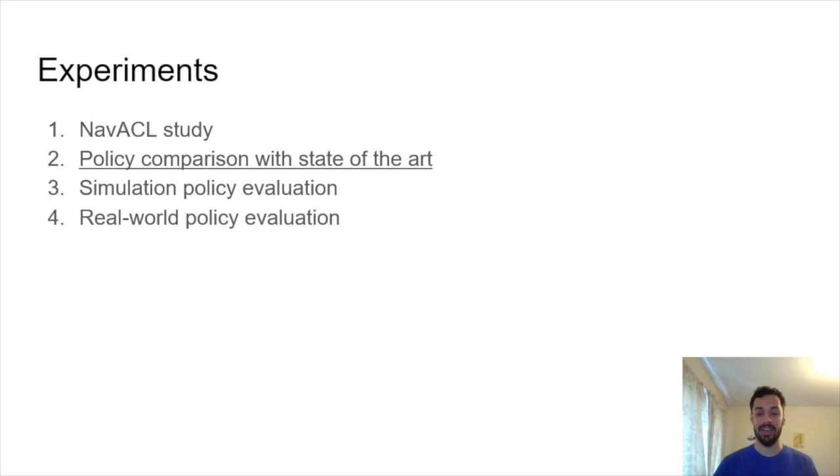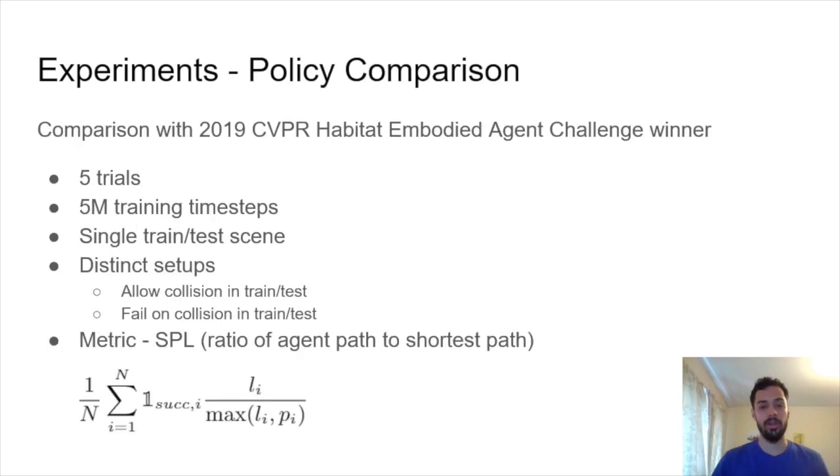Now let's compare our policy trained with NAVACL against state-of-the-art. We compare our NAVACL trained policy with the 2019 CVPR habitat embodied agent challenge winner. Similar to the last experiment, we have five trials, five million training time steps per trial, and we are training and testing on a single scene. We have two distinct setups. In the first setup, we allow collision in the training and testing environment so our agent is allowed to slide along walls. In the second setup, we fail on collision in the training and testing environments as well as provide a negative reward. The metric we use is the shortest path length. This is the standard for embodied navigation and corresponds to zero if our agent never reaches the target and one for the shortest possible path to the target.